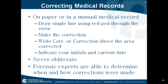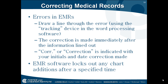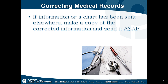Forensic experts are able to determine when and how a correction was made. When correcting mistakes in an electronic medical record, draw a line through the error using the tracking device in the word processing software. The correction is made immediately after the information is lined out. "CORR" or "correction" is indicated with your initials and the date the correction was made. The EMR software locks out any chart additions after a specific time. If information or a chart has been sent elsewhere, make a copy of the corrected information and send it as soon as possible.